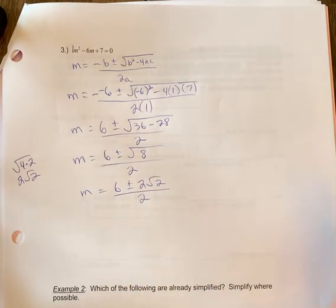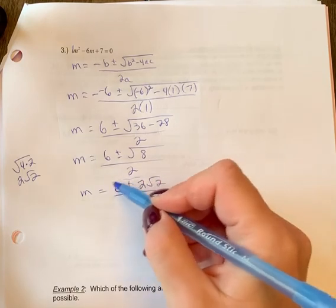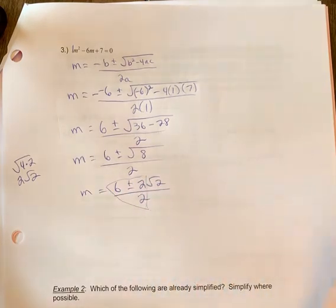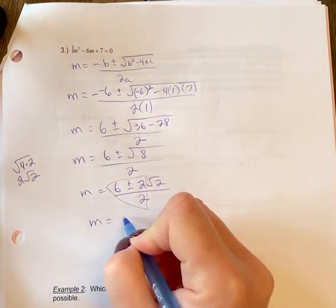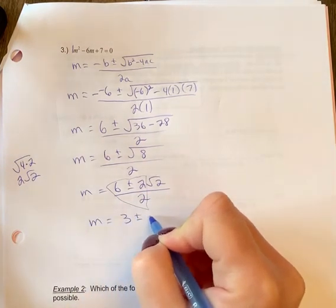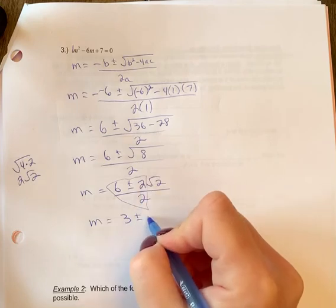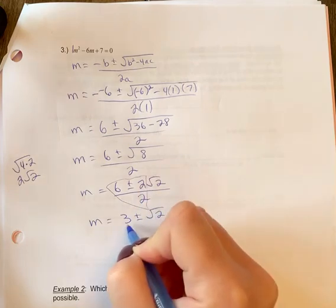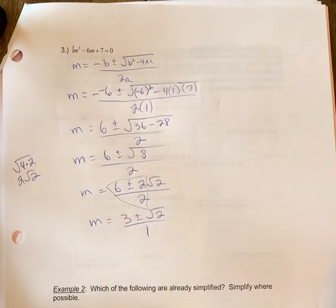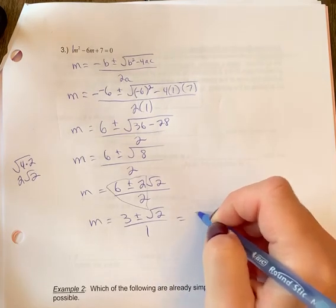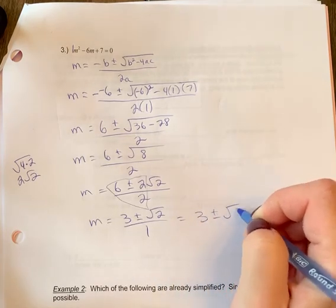Now we look to see if we can simplify more, 6, 2, and 2. So if it's an all or nothing deal here with these three, 2 is divisible into 6 and 2. So we're going to cut all of those in half, divide by 2. So 3 plus or minus 1 root 2, or we'll just write root 2 over 1. Now we don't leave 1 in the denominator, so the answer is just 3 plus or minus root 2.